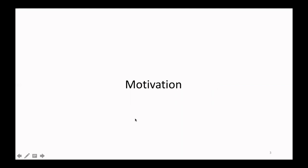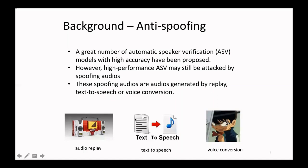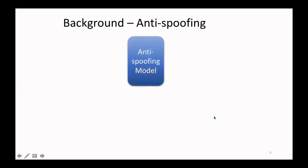Let's look at the motivation. Automatic Speaker Verification, shortened as ASV, is of great importance for biometric identification, and a great number of ASV systems have been proposed. Most of them are with high performance. However, high performance ASV systems may still be deceived by spoofing audios, such as audios generated by audio replay, text-to-speech, or voice conversion. We also need strategies to filter the spoofing audios, so we need anti-spoofing models. The anti-spoofing model is a protector for ASV systems — it protects ASV systems by identifying spoofing audios and then blocking them.